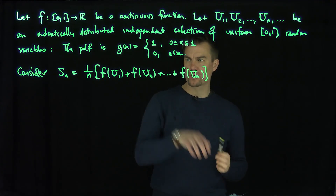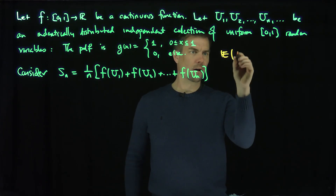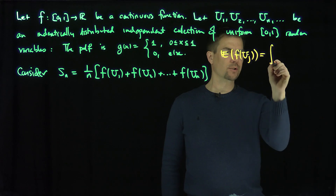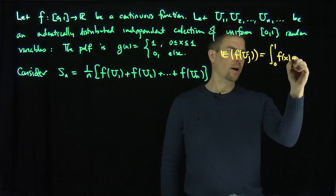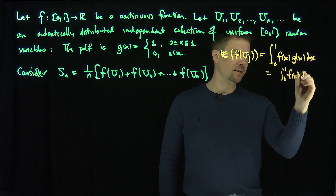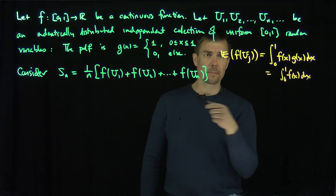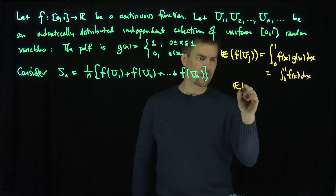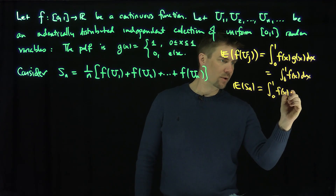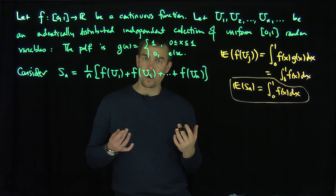Let me look at any of these random variables — f(uj). What's the expected value of f(uj) for any j between 1 and n? It's going to be the integral from 0 to 1 of the function against the distribution dx. But g of x is just 1 on this range, so this is simply the integral from 0 to 1 of f(x) dx. The expected value of Sn, therefore, is just 1 over n times n copies of this, so E[Sn] equals the integral from 0 to 1 of f(x) dx for any n.